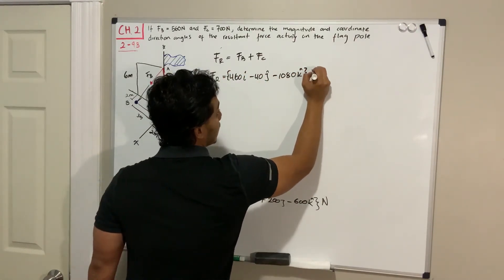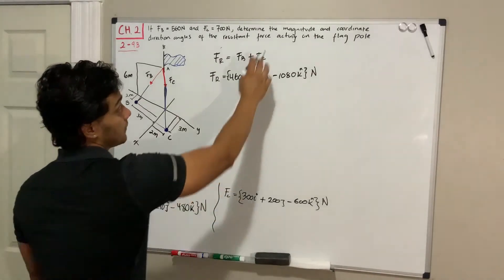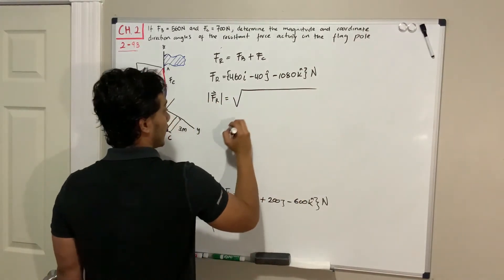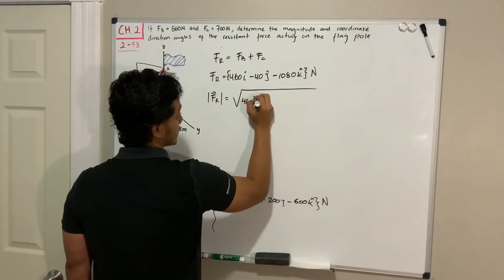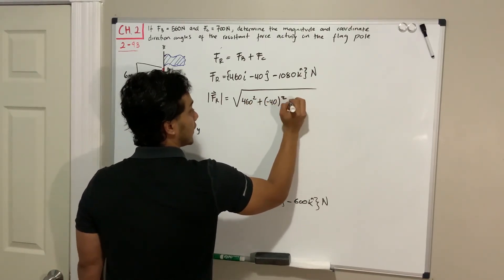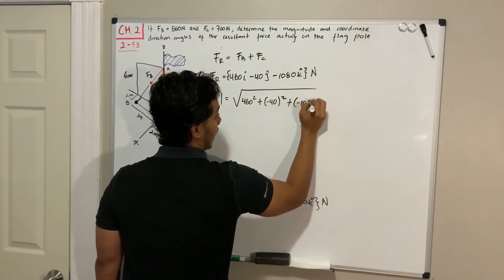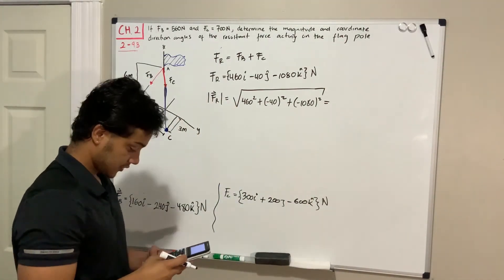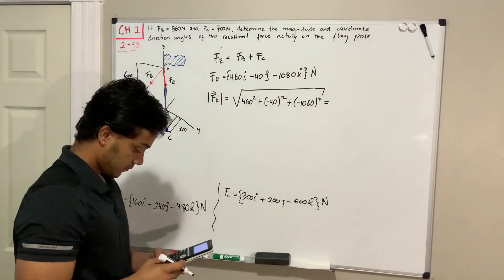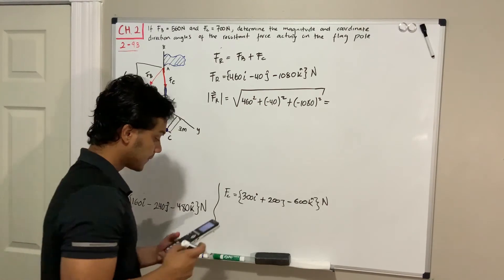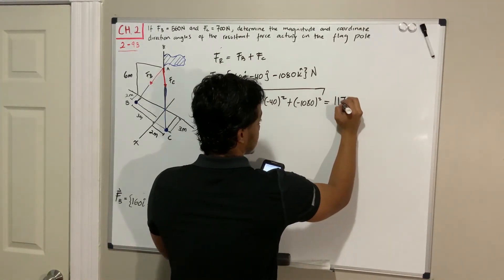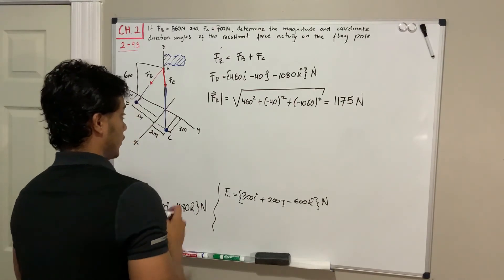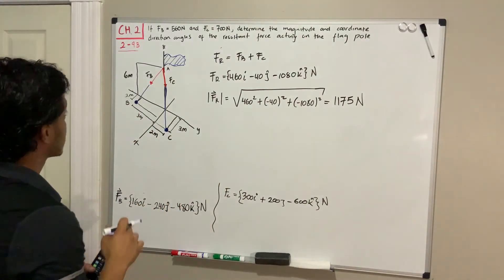They want us to find the magnitude, so we apply the Pythagorean theorem to the resultant. Taking the square root of 460 squared plus 40 squared plus 1080 squared gives a total of 1175 newtons. That is the magnitude of the resultant force.